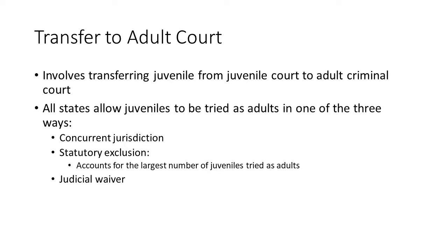The purpose of waiver to adult court — why juveniles are tried as adults — includes cases where those charged with horrible, heinous crimes and violent offenses frequently generate media and community pressure. It is also used to remove chronic offenders who have exhausted the resources and patience of the juvenile justice system, and to impose longer potential sentences than those available within the juvenile justice system.